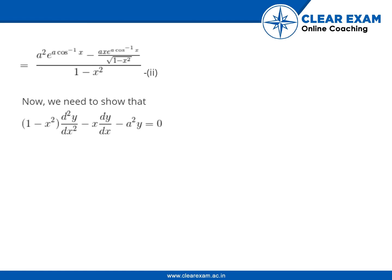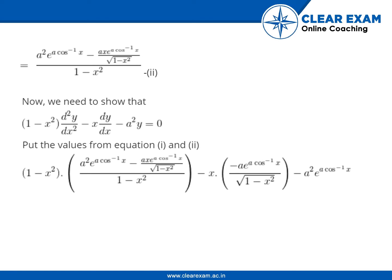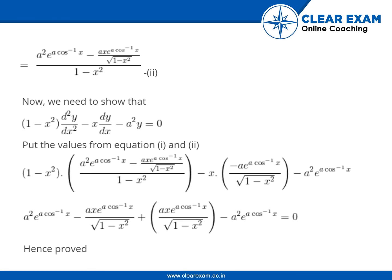Now we need to show that 1 minus x square d square y by dx square minus x into dy by dx minus a square y is equal to 0. Putting the values from equation 1 and equation 2: 1 minus x square into a square e to the power a cos inverse x minus a x e to the power a cos inverse x upon under root of 1 minus x square, upon 1 minus x square, minus a square e to the power a cos inverse x, minus a x e to the power a cos inverse x upon under root of 1 minus x square, plus a x into e to the power a cos inverse x upon under root of 1 minus x square, minus a square e to the power a cos inverse x is equal to 0. Hence proved.